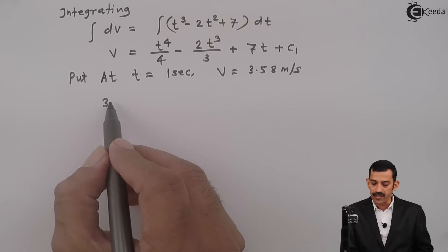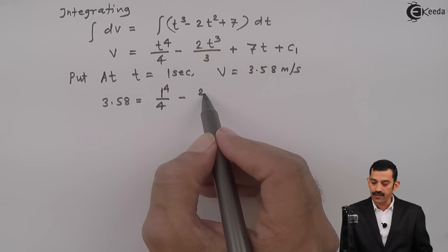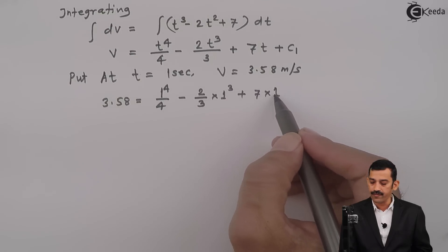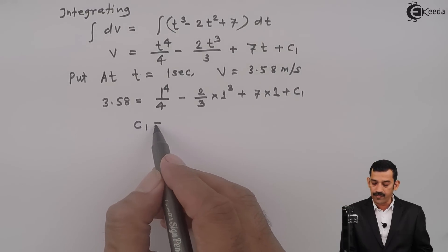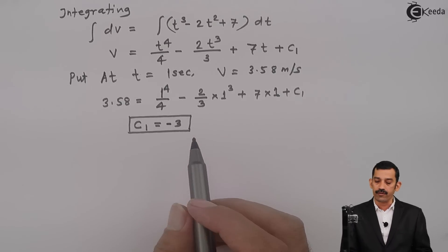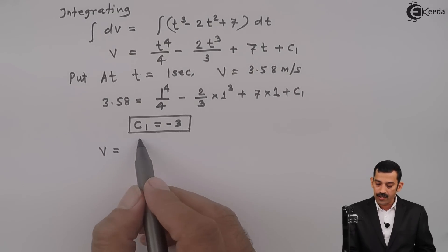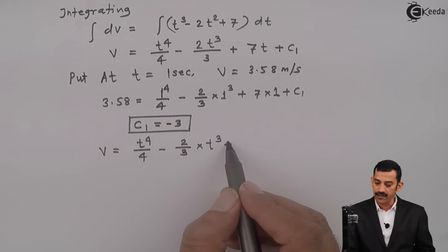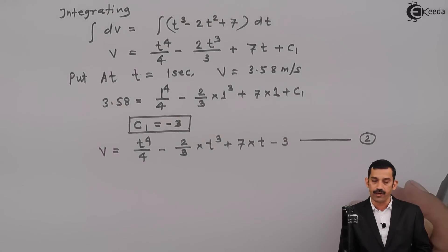Substituting v = 3.58 m/s and t = 1 second: 3.58 = (1⁴/4) - (2/3)(1³) + 7(1) + c1. Using a calculator, c1 comes out to be -3. Once we have c1, we get the equation of velocity in terms of t only. The equation of velocity (Equation 2) is: v = t⁴/4 - (2/3)t³ + 7t - 3.